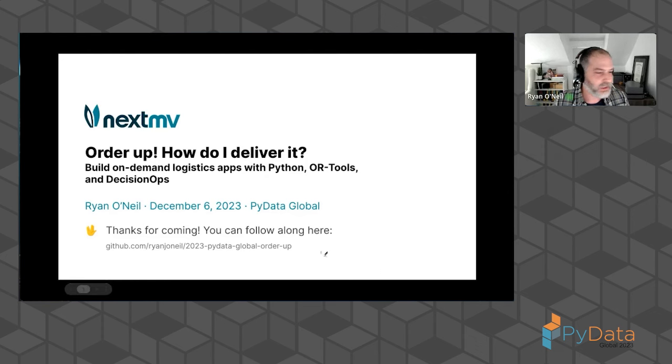If you want to follow along, all the materials for this talk are on that GitHub URL at the bottom. You can go to github.com slash Ryan J. O'Neill slash 2023 Python PyData global order up, and you can find all the code that I'm going to run. You can look at it afterward, but anything I'm doing here you should be able to follow along with.